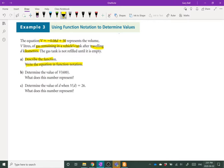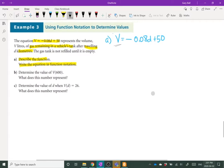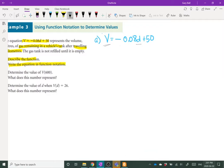So when I write out the equation, we have V equals negative 0.08 D plus 50. So if I were to look at what that means, it says the volume of gas in the tank equals the distance driven times negative 0.08 and then plus 50.